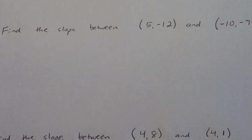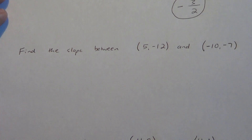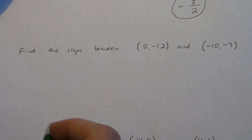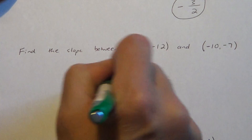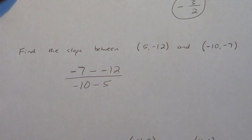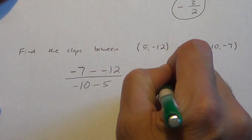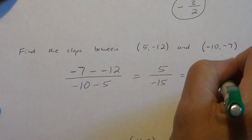Go ahead and try this one: find the slope between (5, -12) and (-10, -7). Pause the video and try it first. Here's the solution: y2 is negative 7, minus y1 which is negative 12, over x2 which is negative 10, minus x1 which is 5. Treat the double negative as a plus: negative 7 plus 12 is 5. Negative 10 minus 5 is negative 15. Positive divided by negative gives negative 1 third.